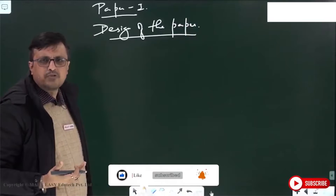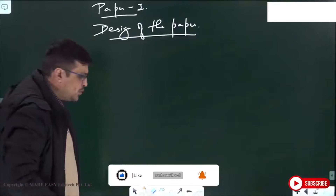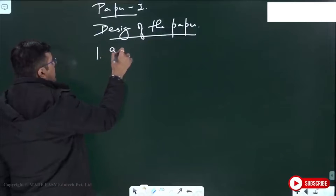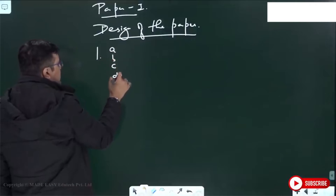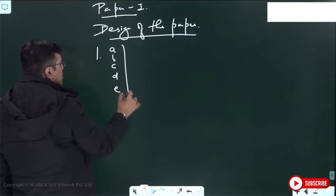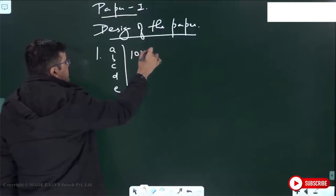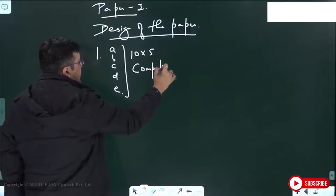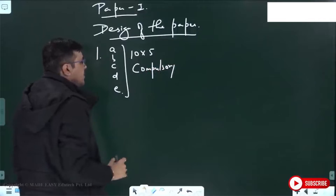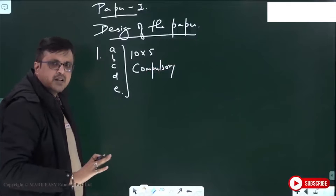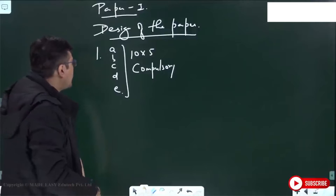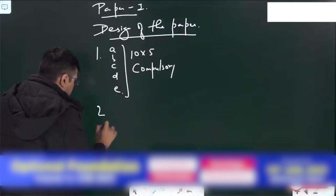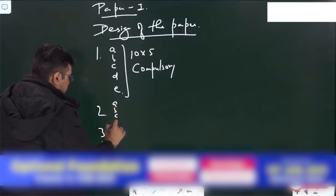What we have seen UPSC doing in the past few years is that question number one will have parts A, B, C, D, and E — and these will all be ten marks each. These are compulsory; you cannot leave any of them. So this will be five compulsory questions. Then you will have questions two, three, and four, and normally there are three parts in each.